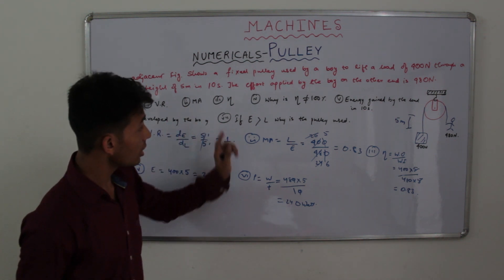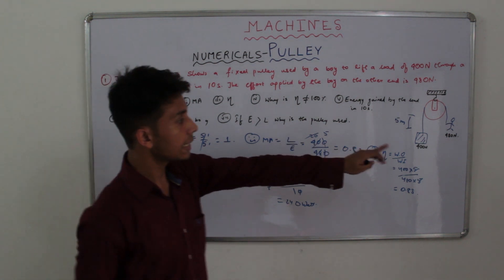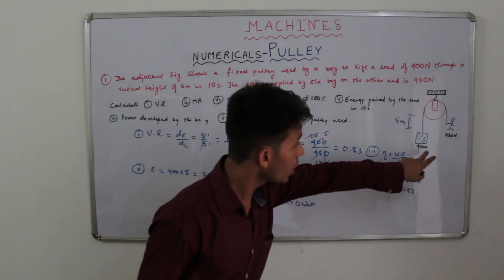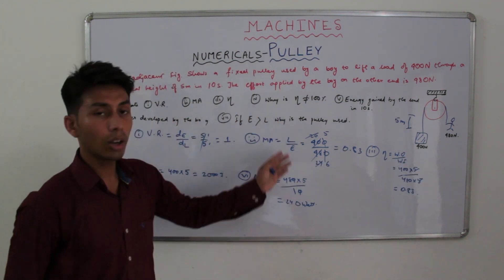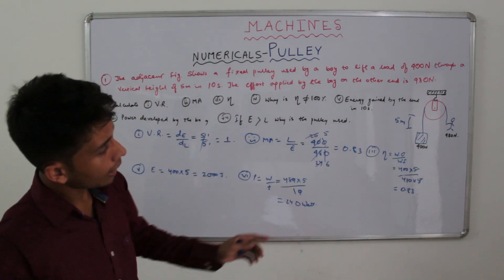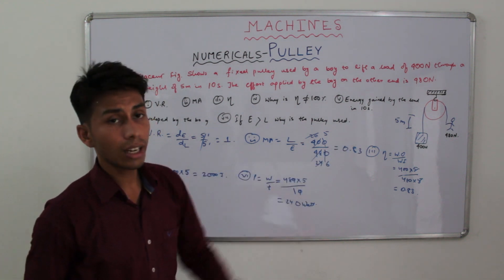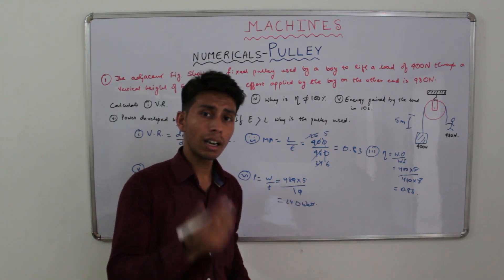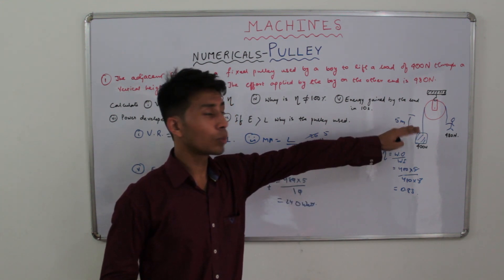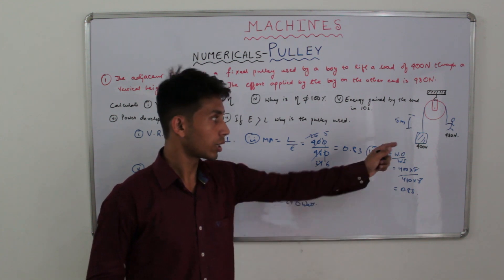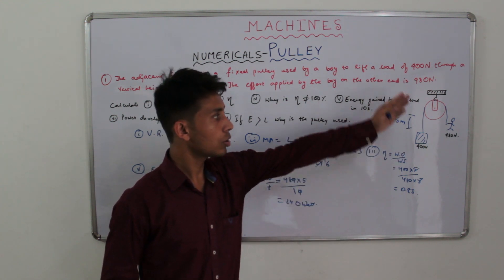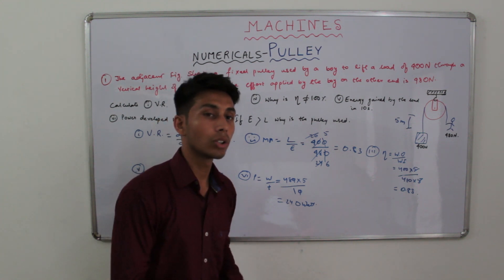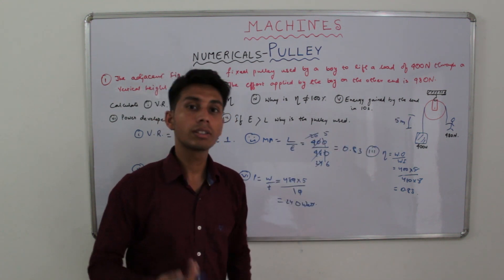The seventh part: the effort given by the boy is 480 Newton whereas the load is 400 Newton, thus effort is greater than load. So if we have to apply an effort greater than load, why would we use this pulley? The answer is simple — a single fixed pulley is used to change the direction of effort. In this case we can apply effort in the downward direction, utilizing our own weight. That is why a single fixed pulley is used.